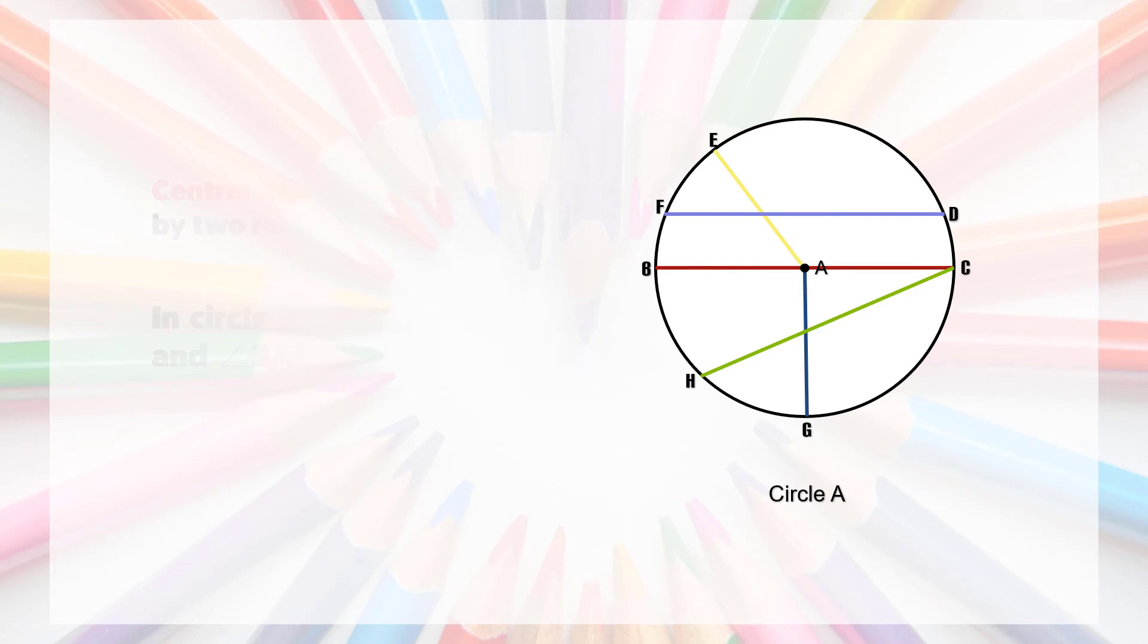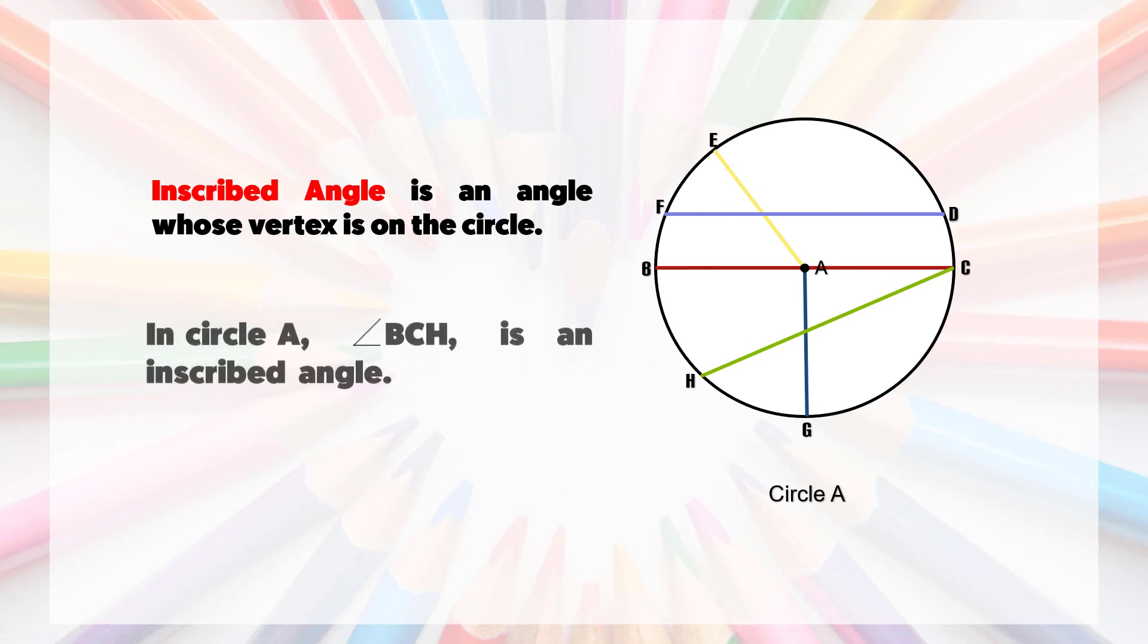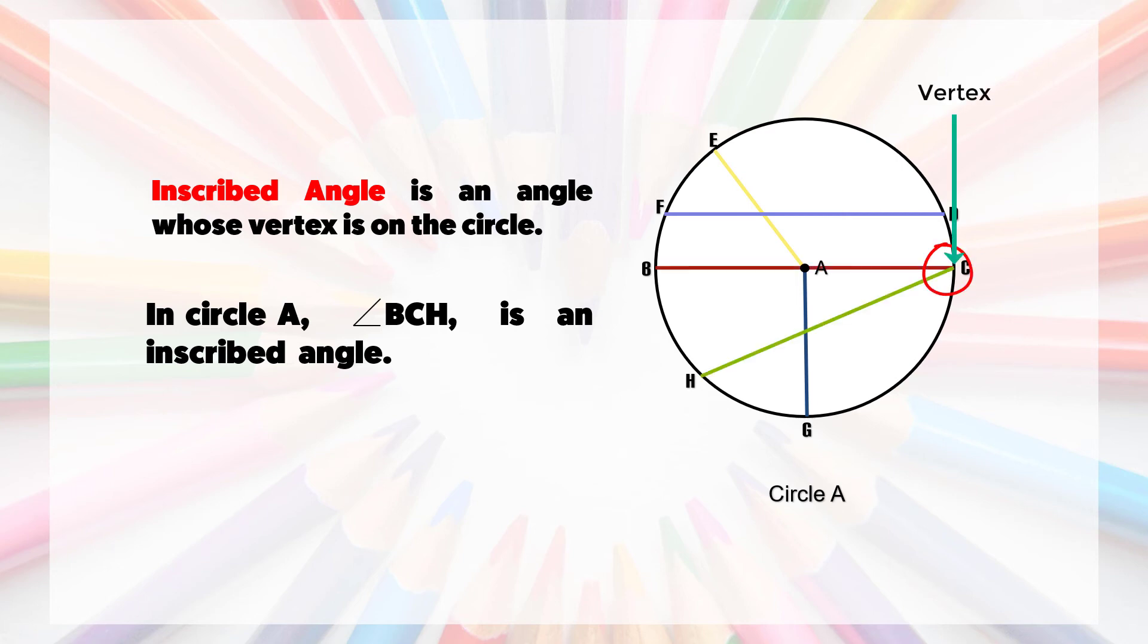Lastly, number five, inscribed angle: Is an angle whose vertex is on the circle. In circle A, angle BCH is an inscribed angle. Now, let us test if you have learned the lesson.